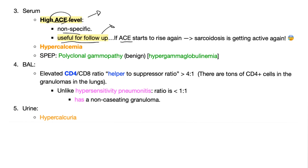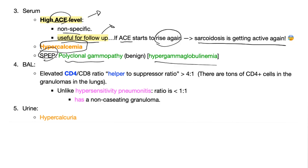If ACE was normal and then starts to rise again, it means sarcoidosis is getting active again — bad news. You'll also find hypercalcemia. On protein electrophoresis, you'll find polyclonal gammopathy, which is a hyper-gammaglobulinemia. On bronchoalveolar lavage, the CD4 to CD8 ratio — also known as the helper to cytotoxic ratio — is high in sarcoidosis, more than 4 to 1. There are more CD4 cells than CD8 cells, and those CD4 cells are the ones creating the non-caseating granuloma.